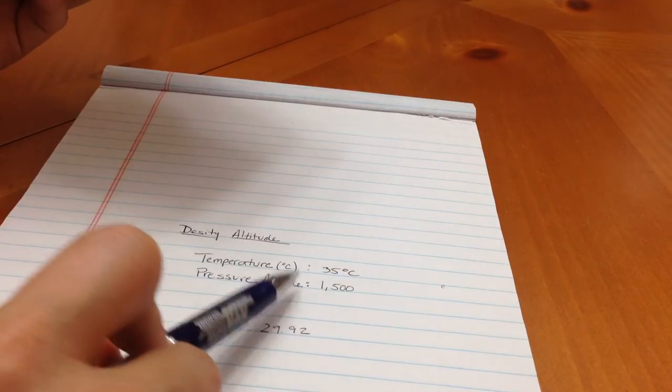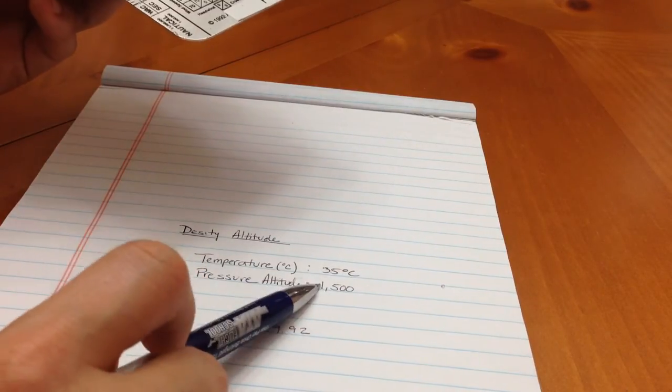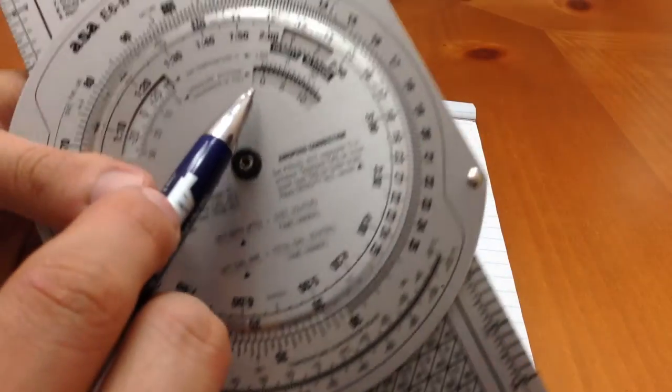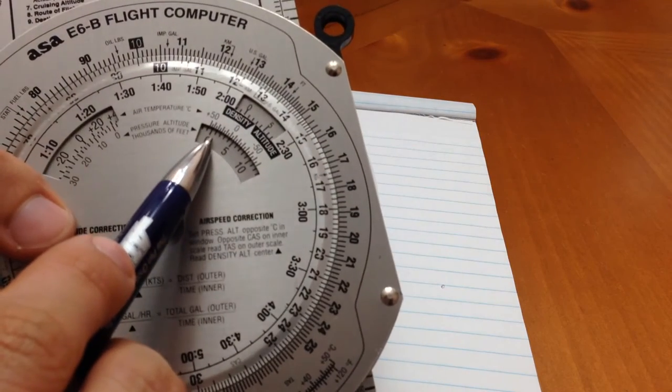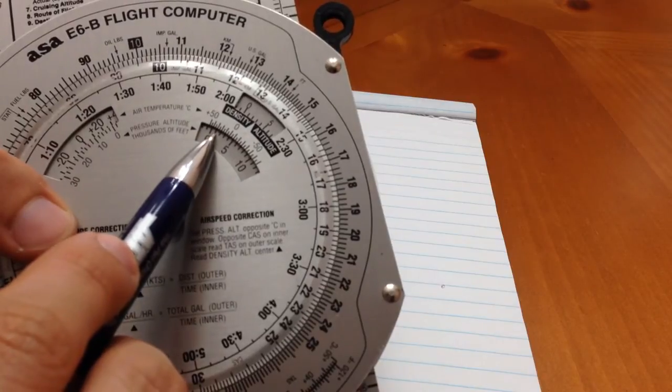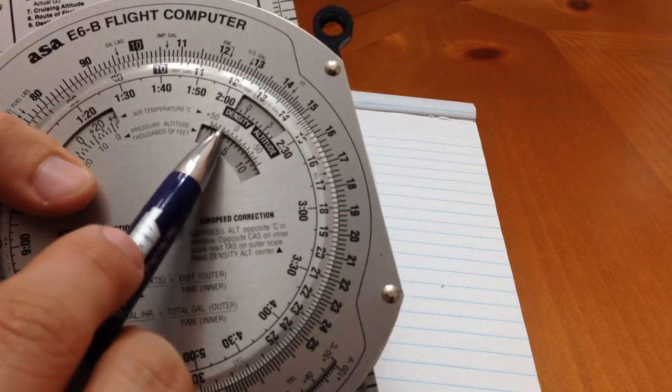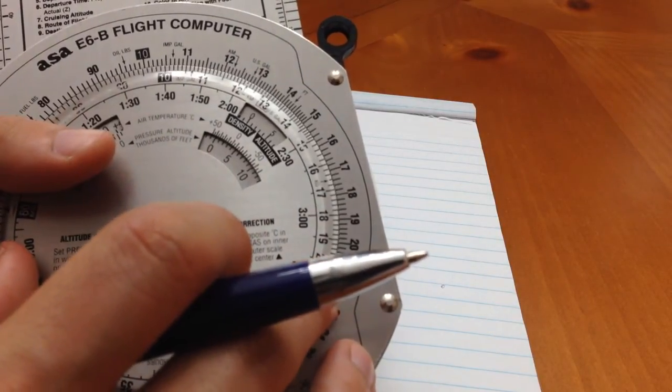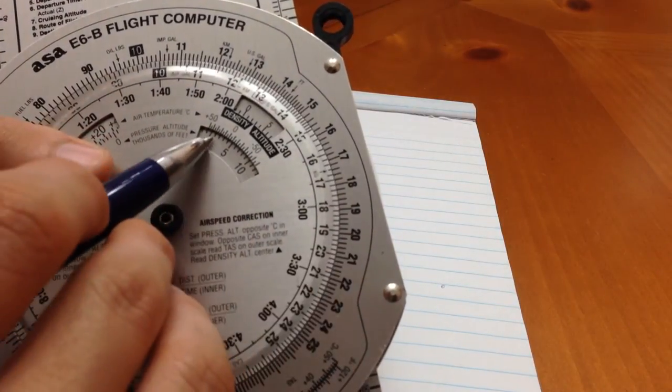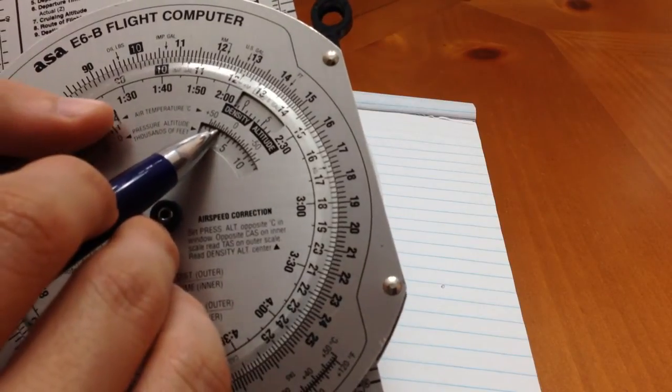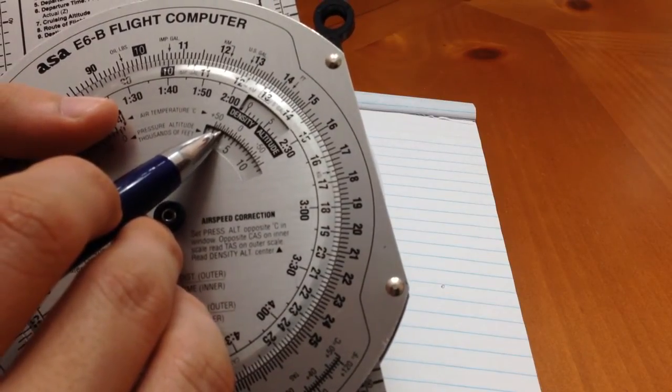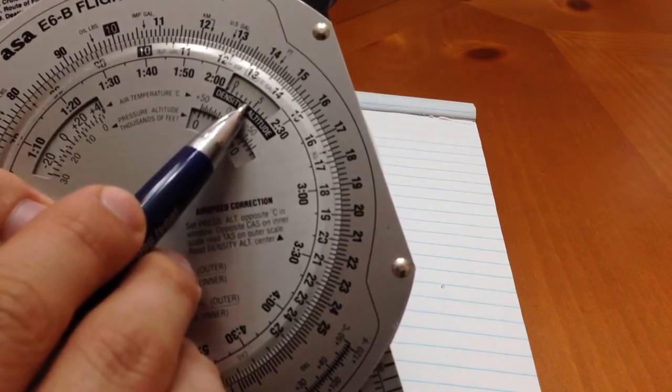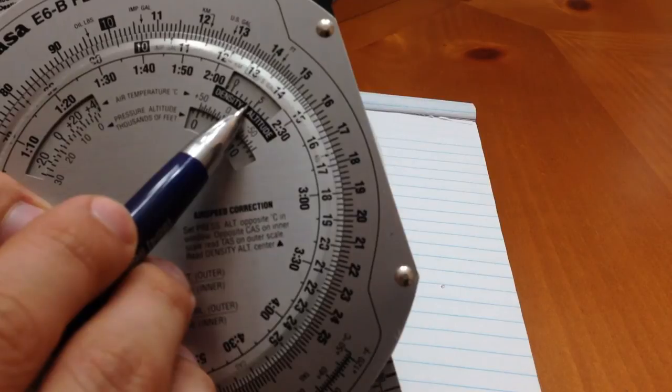So let's say our pressure altitude is 1,500 feet and our temperature is 35 degrees Celsius. We find 1,500 feet which is right here and we look for 35 degrees on the top and simply align those two together. So we have 1,500 and 35 and our density altitude is somewhere between 4,000 to 4,100 feet.